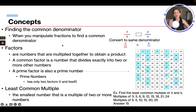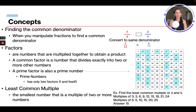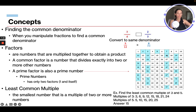Factors are numbers that are multiplied together to obtain a product. A common factor is a number that divides equally into two or more other numbers. A prime number has only two factors: one and itself. Examples of prime numbers are 2, 3, 5, 7, 11, 13, 17. For instance, no number goes into 17 except 1 and 17. Same with 59 — the only numbers that go into 59 are 1 and 59, which is what makes it a prime number.